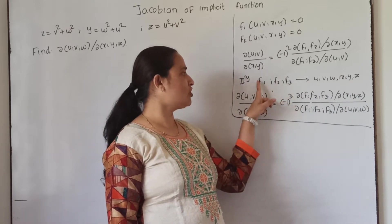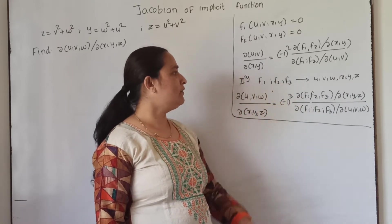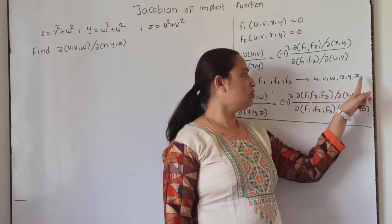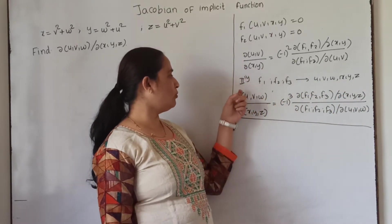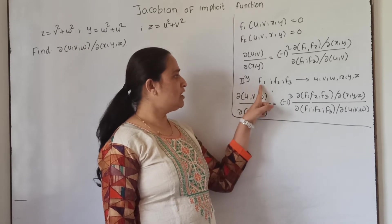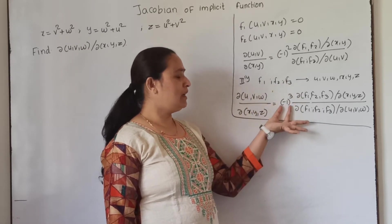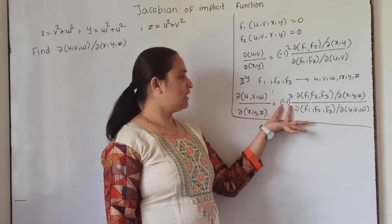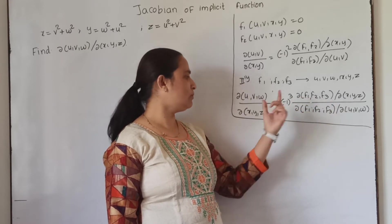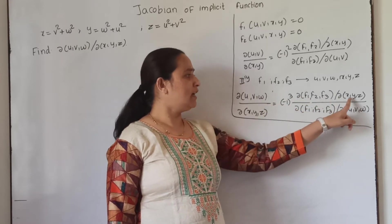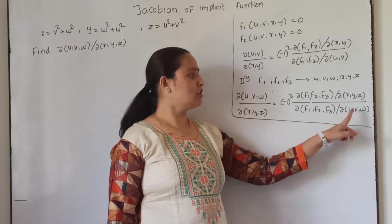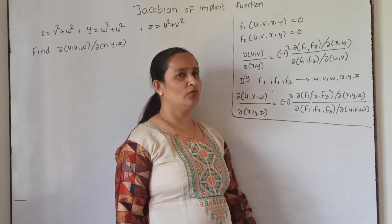Similarly, if you have three functions f1, f2, f3 between the six variables u, v, w and x, y, z, and you want the Jacobian of uvw with respect to xyz, since we have three functions we multiply by minus 1 cubed times Jacobian of f1, f2, f3 with respect to xyz, upon Jacobian of f1, f2, f3 with respect to uvw.